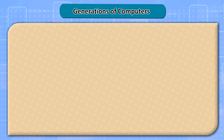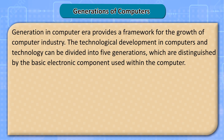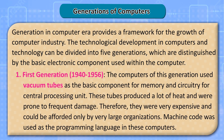Generations of Computers. Generation in Computer Era provides a framework for the growth of the computer industry. The technological development in computers can be divided into five generations, distinguished by the basic electronic component used within the computer. The computers of the first generation used vacuum tubes as the basic component for memory and circuitry for the central processing unit. These tubes produced a lot of heat and were prone to frequent damage, making them very expensive and affordable only by very large organizations. Machine code was used as the programming language in these computers.